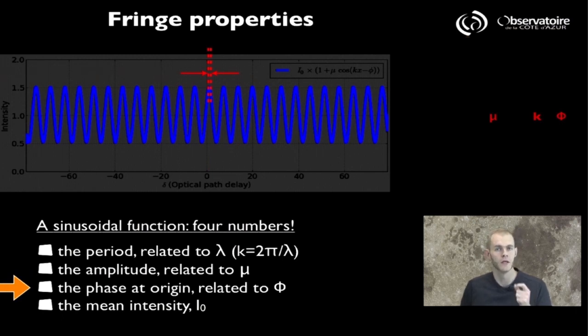The other number that matters is going to be the phase. That is, in a way, the location of the first bright fringe in relation to a predefined position, which we typically label as zero on our plots.